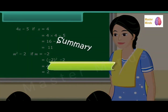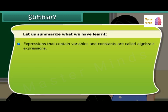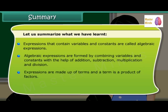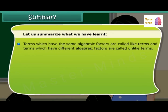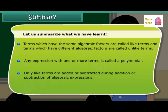Let us summarize what we have learnt. Expressions that contain variables and constants are called algebraic expressions. They are formed by combining variables and constants using addition, subtraction, multiplication, and division. Expressions are made up of terms, and a term is a product of factors. The coefficient is the numerical factor in the term. Terms with the same algebraic factors are called like terms; those with different algebraic factors are called unlike terms. Any expression with one or more terms is called a polynomial. Only like terms are added or subtracted during addition or subtraction of algebraic expressions.